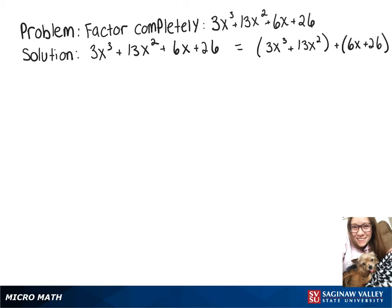Now looking at each of those groups we've made, we want to see what we can factor out. In our first group, we can factor out x², leaving us with 3x + 13.